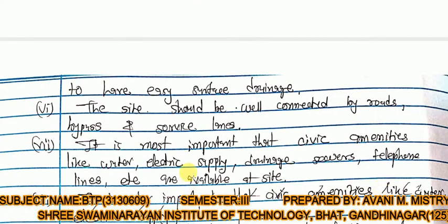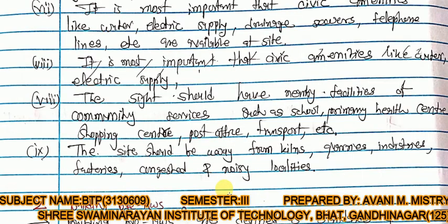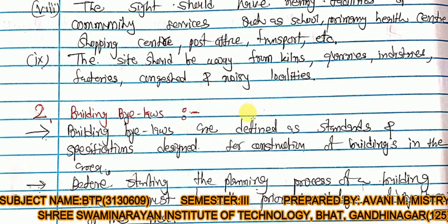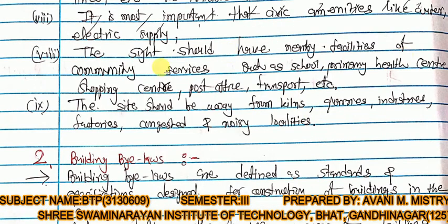Service amenities like water, electric supply, drainage, sewers, telephone lines, etc., should be available at the site. The site should have nearby facilities of community services such as school, primary health center, shopping center, post office, and transport. The site should be away from kilns, quarries, industries, factories, congested and noisy localities.